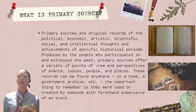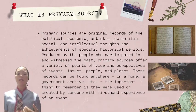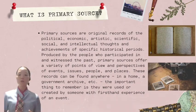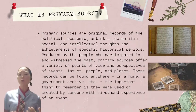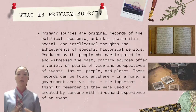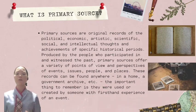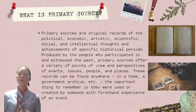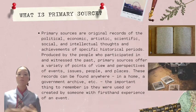A primary source is anything that gives you direct evidence about the people, events, or phenomena that you are researching. Primary sources will usually be the main objects of your analysis. If you are researching the past, you cannot directly access it yourself, so you need primary sources produced at the time by participants or witnesses, like letters, photographs, or newspapers. If you are researching something current, your primary sources can either be qualitative or quantitative data that you collect yourself, like through interviews, surveys, or experiments, or sources produced by people directly involved in the topic, like official documents or media texts.